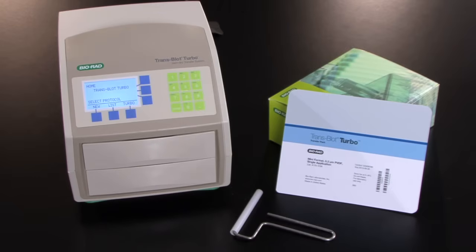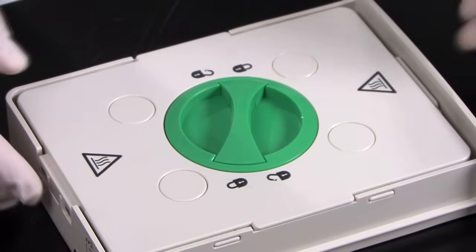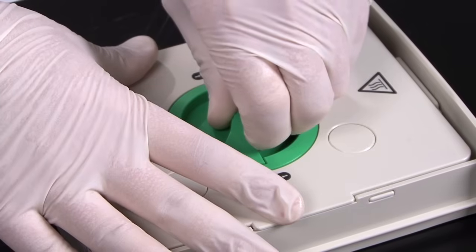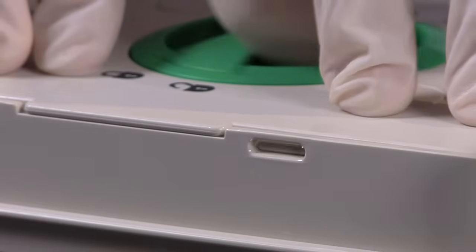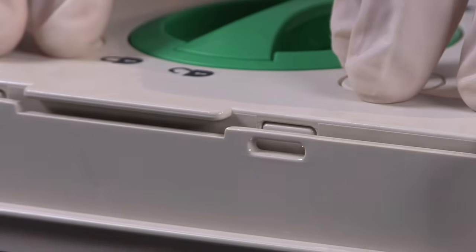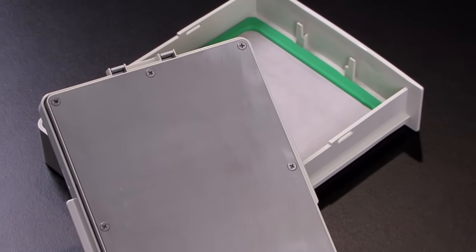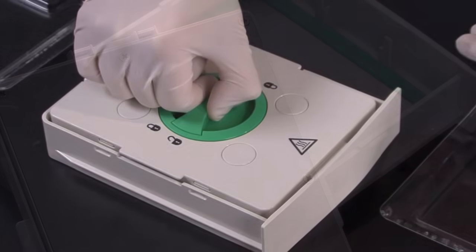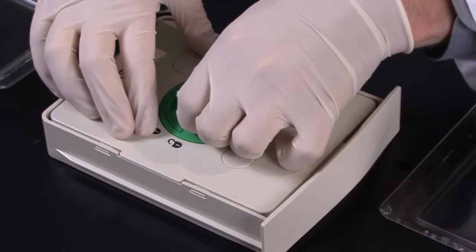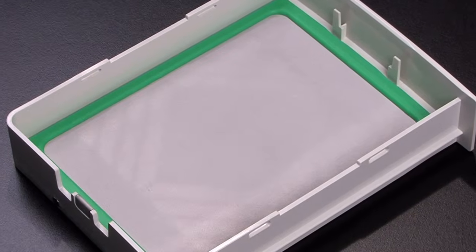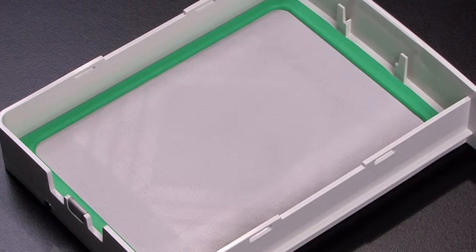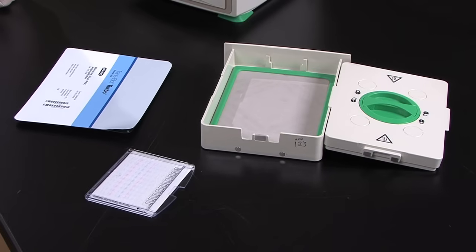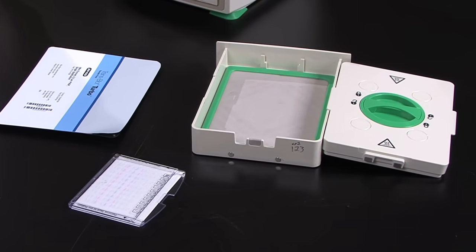First, let's assemble a transfer sandwich using turbo transfer packs. Take a cassette and open the lid by turning the knob counterclockwise. You will feel a small click. The top lid contains a stainless steel cathode fixed to a spring-loaded plate that ensures that equal and consistent pressure is applied to the transfer sandwich. The bottom tub contains an anode plate made of platinum-coated titanium. Both electrodes have been designed to withstand years of use.